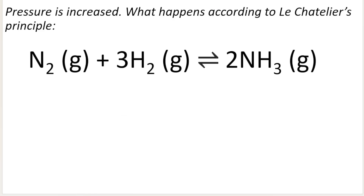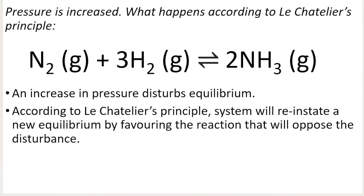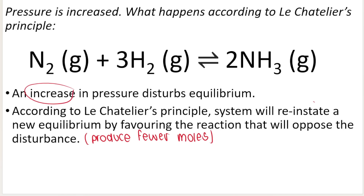So let's do an example. If I increase pressure, what happens according to Le Chatelier's principle? Let's answer this as if we were doing it in an exam. An increase in pressure disturbs equilibrium. According to Le Chatelier's principle, the system will reinstate a new equilibrium by favoring the reaction that will oppose the disturbance. So it will favor the reaction that will produce fewer moles of gas — fewer moles of gas, very important.